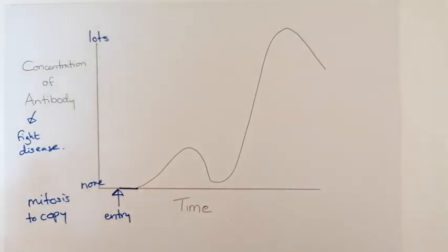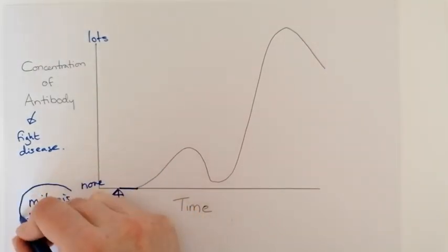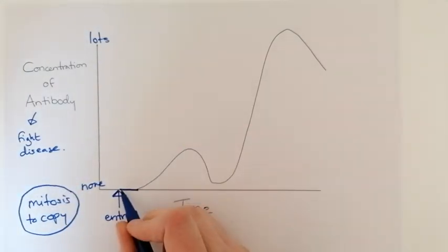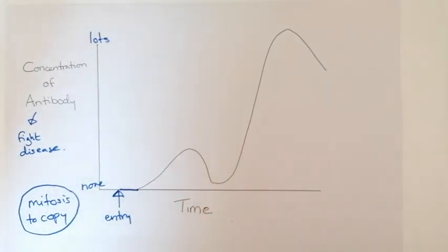As a general rule if you are trying to fight any kind of war, the more soldiers you've got the better you are going to do. So in this first stage your white blood cell is copying itself lots of times so it is easier for it to produce lots of antibodies.